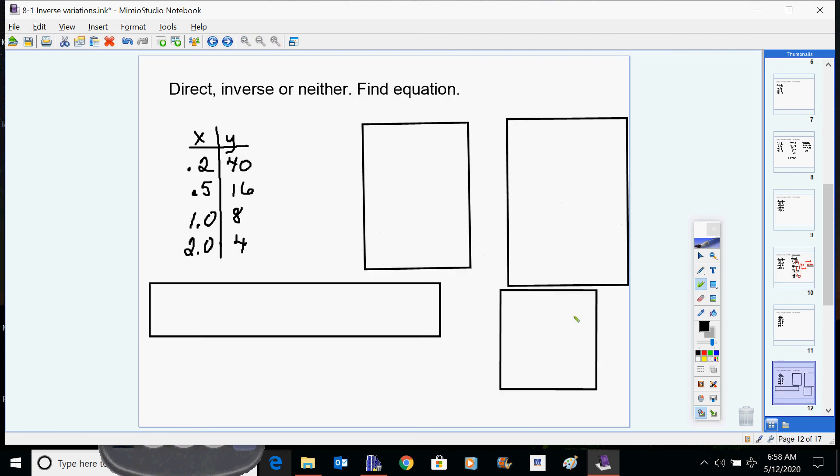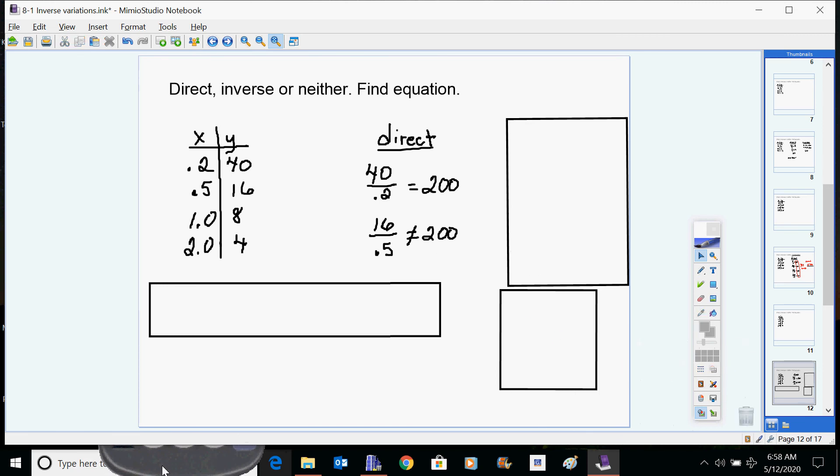Let's do it again. We want to check to see what we've got here. Check for direct variation. You're checking to see if the ratios are the same. First one, 40 divided by 0.2 gives you 200. 16 divided by 0.5 does not give you 200. Let's check that: 16 divided by 0.5 is 32, nope, not 200.